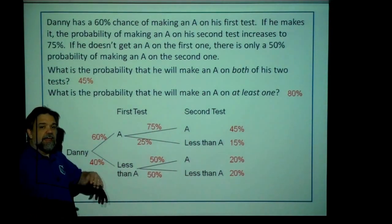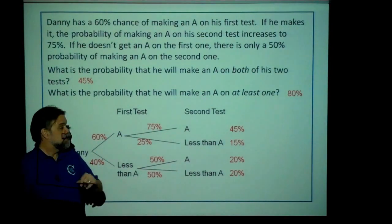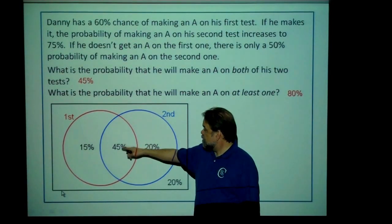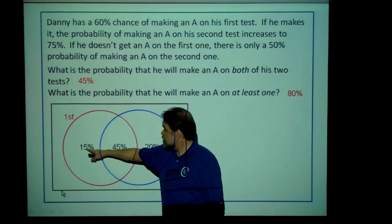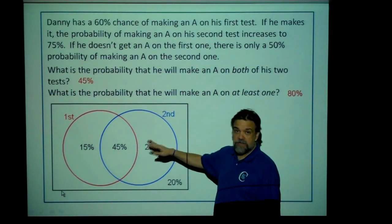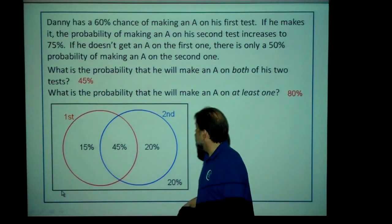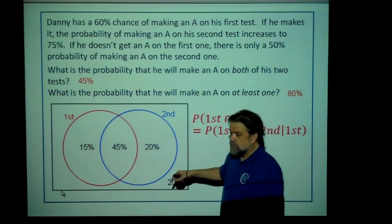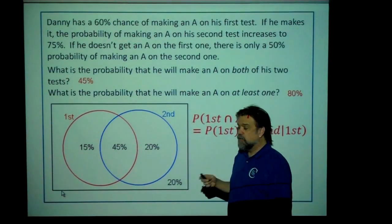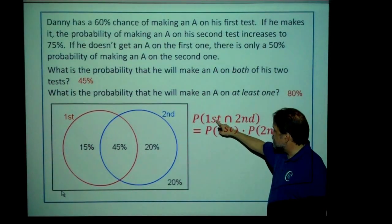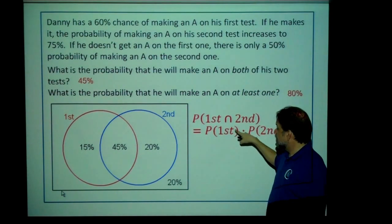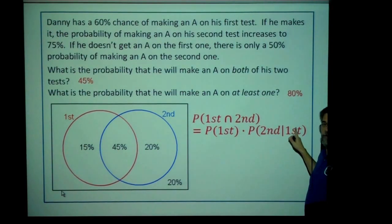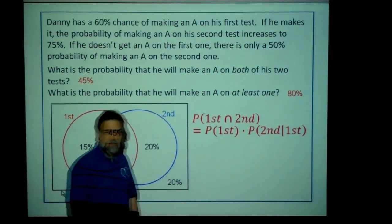So that's Danny. You don't have to describe Danny's situation with the tree, although I would. You could also describe it with the Venn diagram: 45% chance of making an A on both tests, 15% chance of making an A on the first one but not the second one, 20% chance of making an A on the second one but not the first one, and a 20% chance of not making an A at all. When doing a Venn diagram, we always start with the middle. The way you get that 45% is you multiply the probability of making an A on the first one times the probability of making an A on the second one, assuming you made an A on the first one. This part right here is what we call conditional probability — there's a condition on that probability.